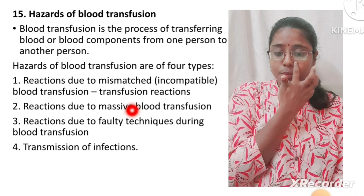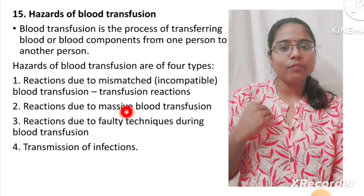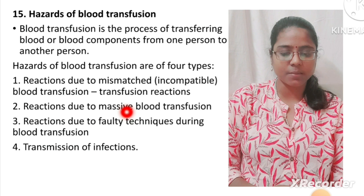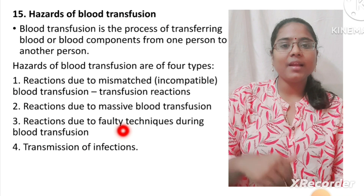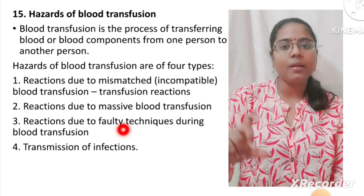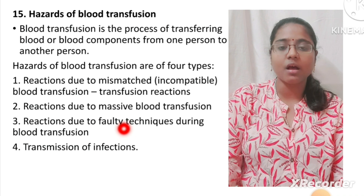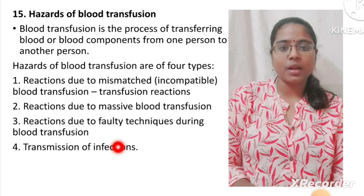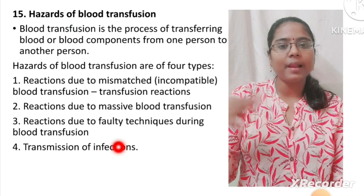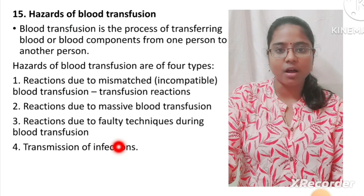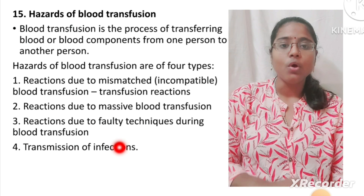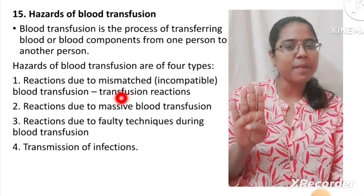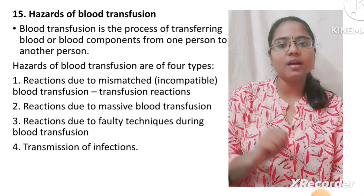The second hazard is massive blood transfusion. If there is too much blood or insufficient blood in the body, the reaction is a massive blood transfusion complication. Third hazard: faulty techniques during transfusion — if blood is not properly sterilized or the transfusion process is not followed correctly. Fourth hazard: infections. If the blood donor has any infection, there is a chance of transmission of infections to the recipient. These are the hazards of blood transfusion.